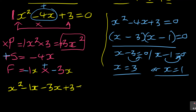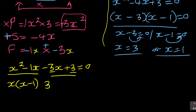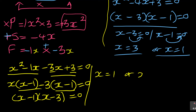Now factorize by grouping. From the first two terms, x is common: x(x minus 1). From the last two terms, take out negative 3: negative 3(x minus 1). The bracket (x minus 1) is common, so you get (x minus 1)(x minus 3) equals zero. Therefore x equals 1 or x equals 3 — same result either way.